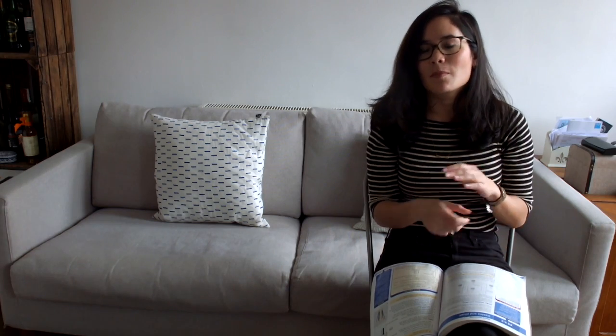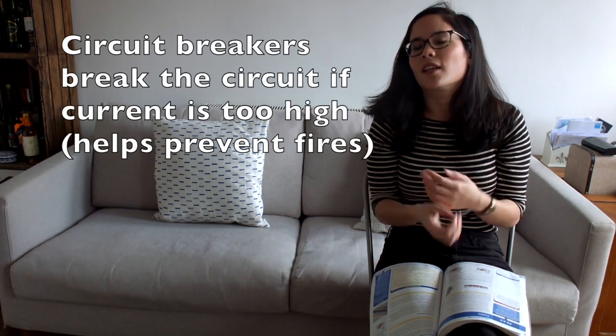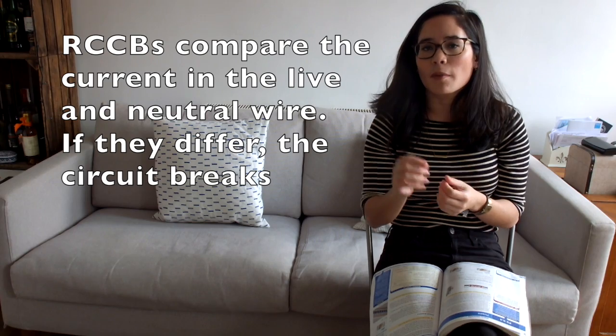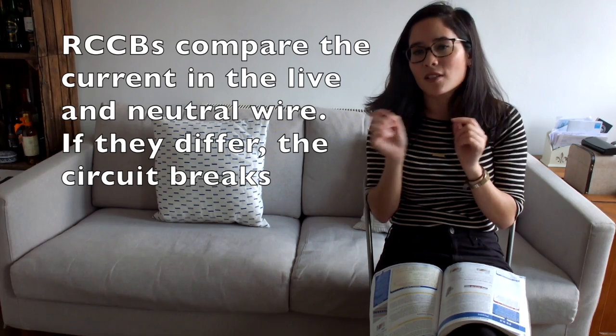How does a circuit breaker work? It breaks the circuit if the current is too high. My next question is only applicable to people studying certain exam boards, and it is: how does a residual circuit breaker work? A residual circuit breaker works by comparing the current in the live wire with the neutral wire, and if these currents are different, then it will break the circuit.